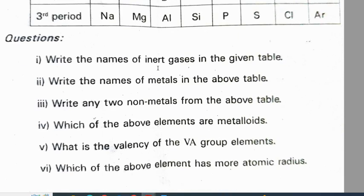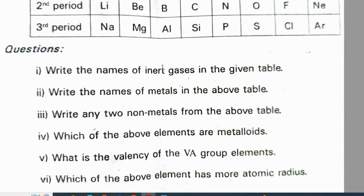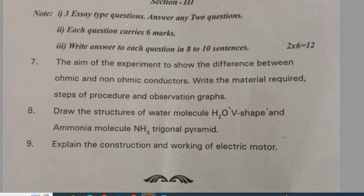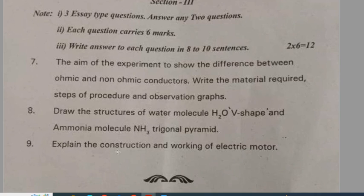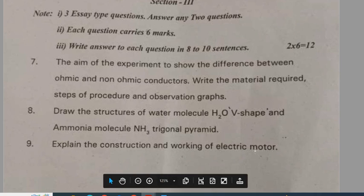A table-related question from the periodic table. From a practice paper of Hyderabad district: The aim of the experiment is to show the difference between ohmic and non-ohmic conductors — write the material required, steps of procedure and observation graph. Draw the structure of water molecule H2O (V-shape) and ammonium molecule NH3 (trigonal pyramid). Explain the construction and working of an electric motor.